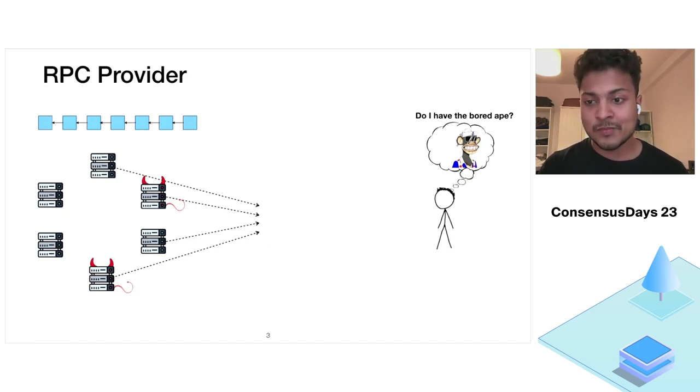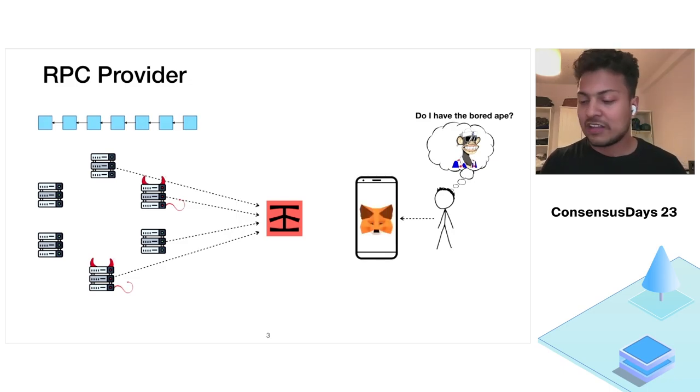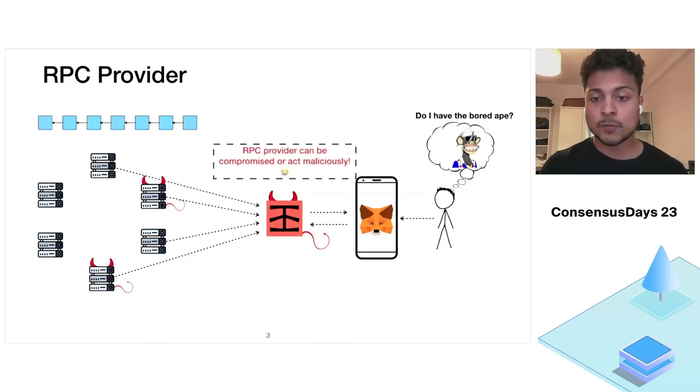So most Ethereum users today simply outsource this work of running full node to third party providers such as Infura. And then they can simply run a very lightweight wallet in their browser or smartphone, which simply trust this third party provider to give the correct state of the network. But what happens if this third party provider turns malicious or is compromised? Currently, the wallets will simply show the incorrect state to the user.